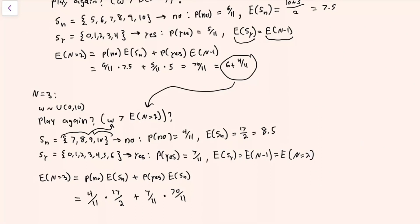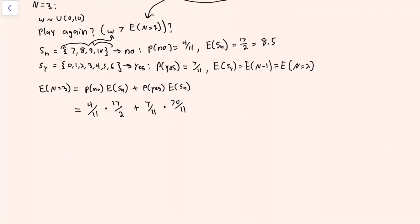Having thought through the first three values of n and seen some patterns, it's time to program up a function. I'll write this in Python, calling the function ev with argument n. Since the expected value for a certain number of rounds depends on the expected value with n minus 1 rounds, I'll write a recursive solution. For the base cases: if the number of rounds is less than or equal to zero, return zero. When there's only one round, the expected value is 5, so I'll hard code that in.